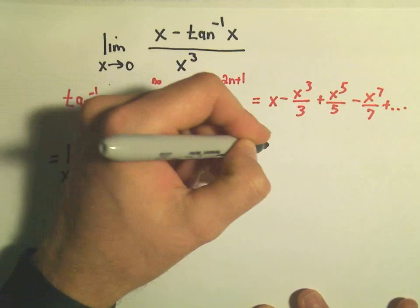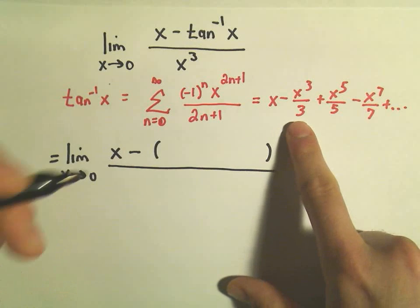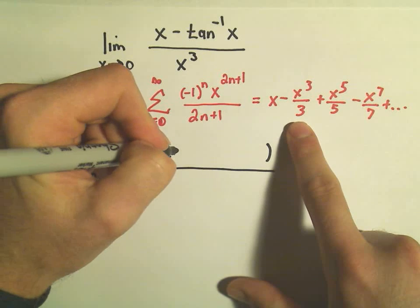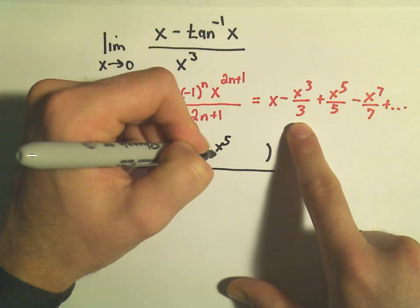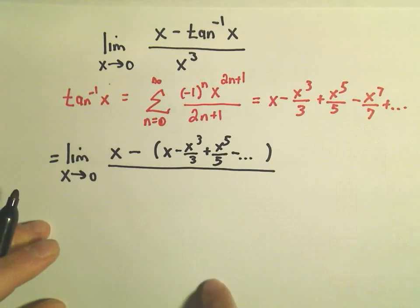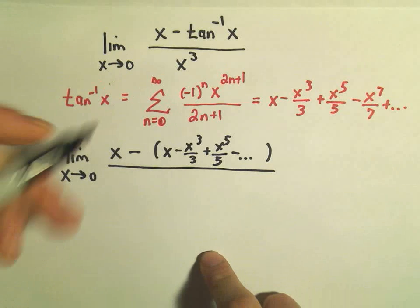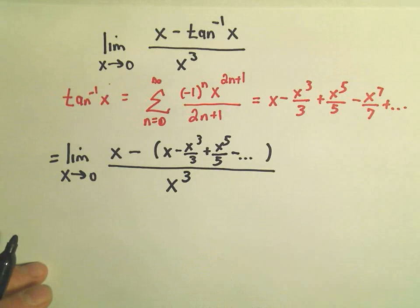well, the series expansion for arctangent, which is x minus x cubed over 3, plus x to the 5th over 5, etc. So I'm not going to write them all down. And then in the denominator, we originally had our x to the 3rd power. So this is the thing we're going to try to take the limit of.